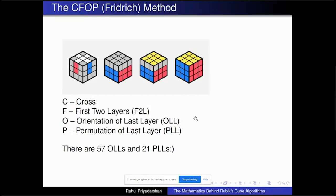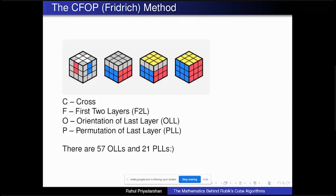How many of you have tried to solve a Rubik's cube and ended up solving just one layer? The major problem you would have faced is: when you start solving the second layer, the pieces in your first layer get disturbed. That was one of the main reasons I decided to learn it completely.